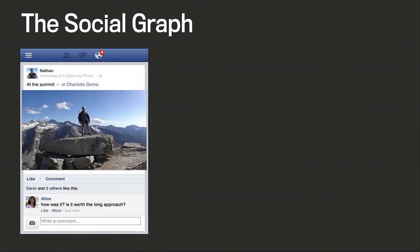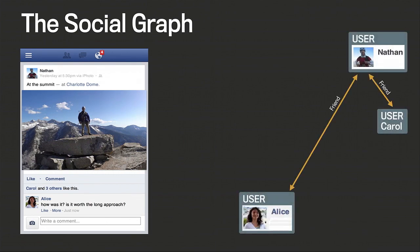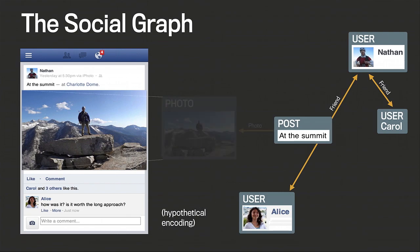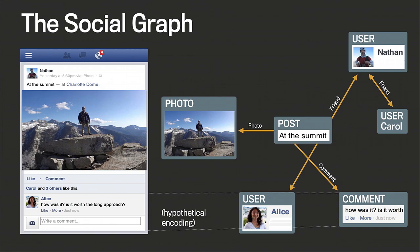Before we get into the nitty-gritty, let me give you a high-level view of the social graph. Here's a typical image you might see on your mobile phone — a standard picture with some comments. On the right we have what you'd consider the social graph: people associated with each other via friend edges. The social graph contains more than just people and connections — it contains objects. For example, there's a post object, and that post object has a photo attached to it, and a comment object.